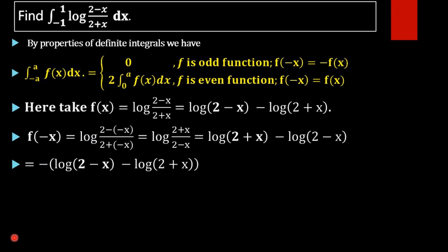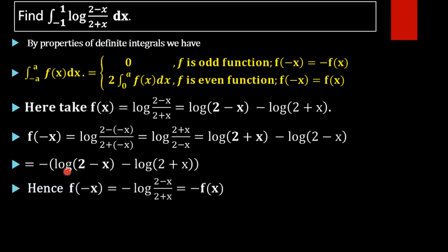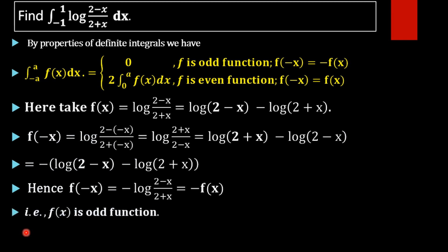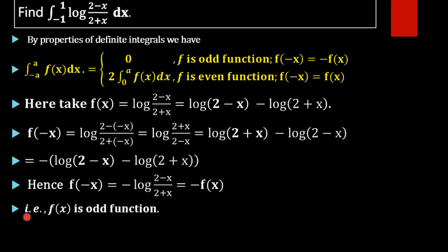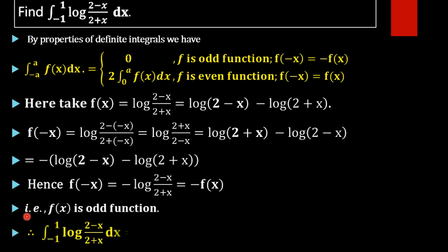We can rewrite f(minus x) as log of (2 minus x) divided by (2 plus x), which is negative of log of (2 minus x) divided by (2 plus x). Since f(x) equals log of (2 minus x) divided by (2 plus x), we get f(minus x) equal to negative of f(x). Therefore f(x) is an odd function, and its integral from minus 1 to 1 equals 0.